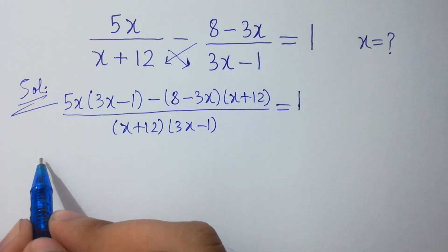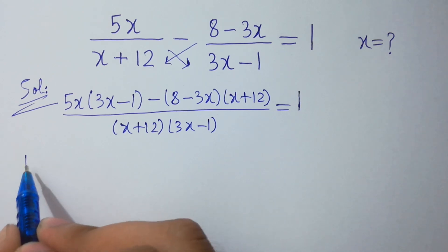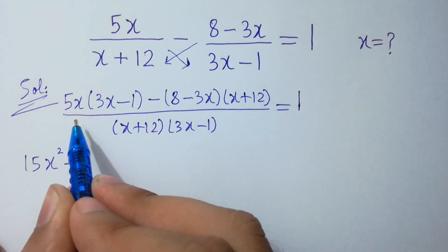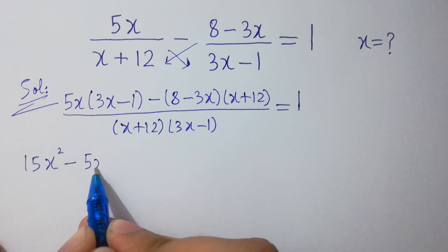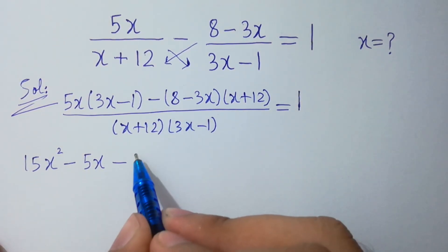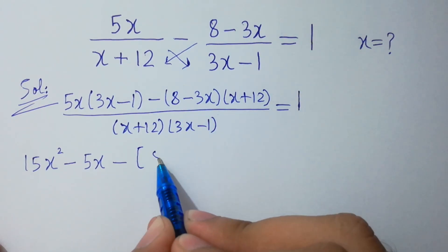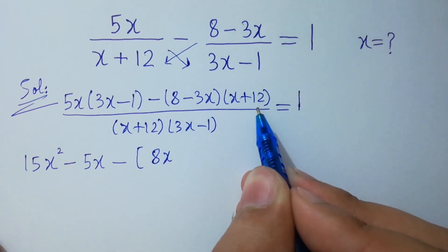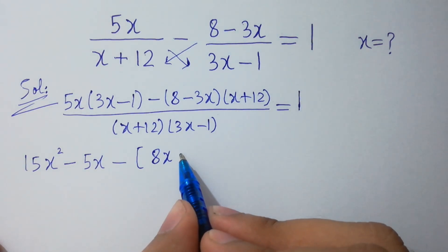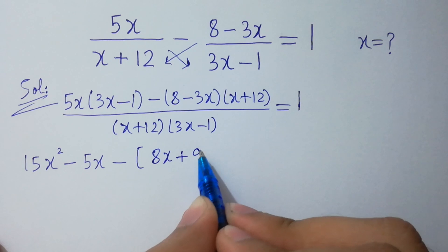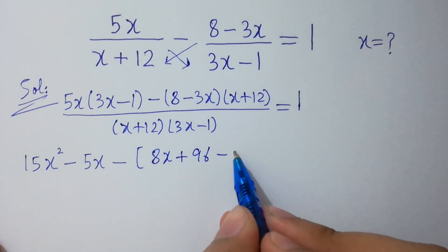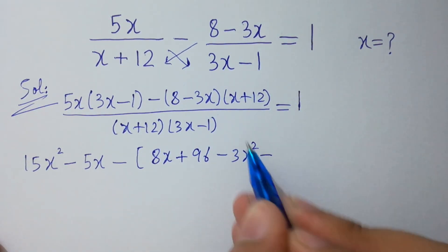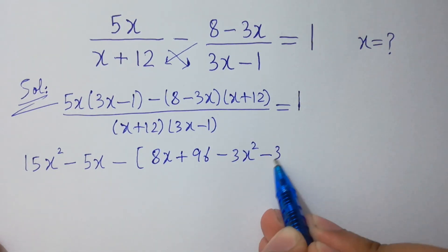Expanding: 5 times 3 is 15x squared minus 5x, minus 8x plus 96, minus 3x squared plus 36x.